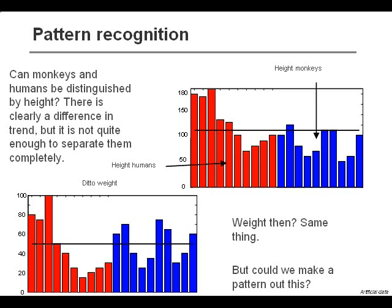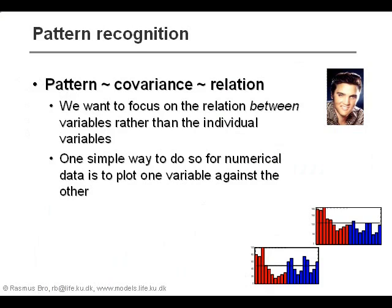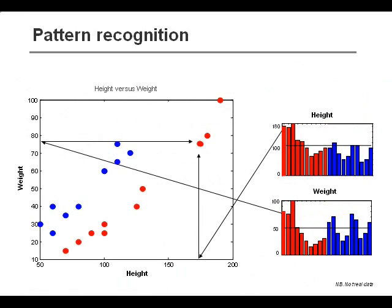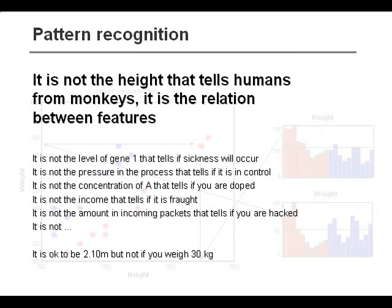So let's try and see if we can find a way to look at the pattern of these two variables. One simple way would be to plot the weight versus the height. That way we get not only the levels of the individual variables, but we also get the relation between them. And as you see here, we now have a perfect separation just by plotting the height and the weight against each other. This is the kind of pattern recognition we are looking for when we do PCA — we can extract more information from the individual measurements than just the individual measurements themselves. This is a very important principle that will be useful in many different kinds of applications.